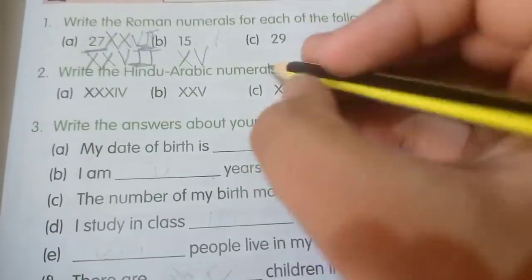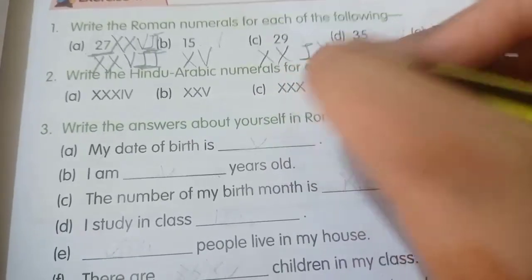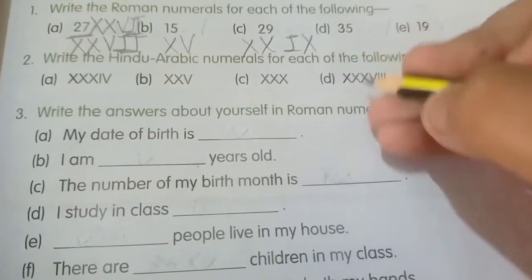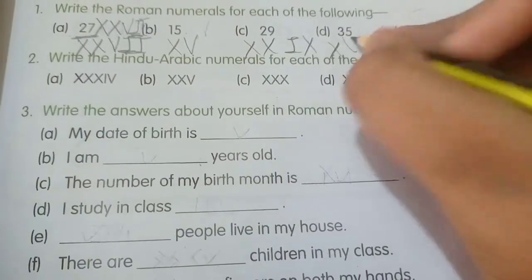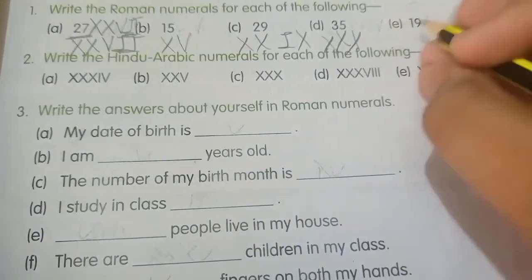29. For this, what is it? XXIX. 35. For 35, what is it? XXXV.